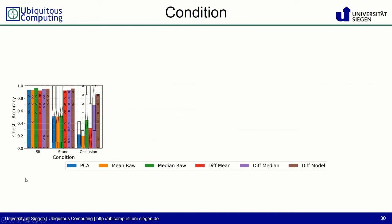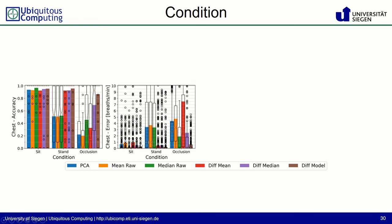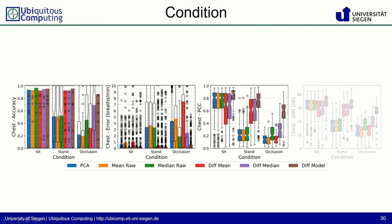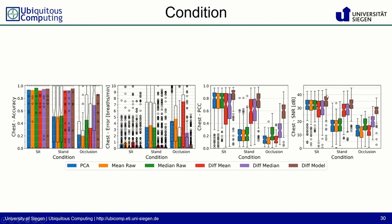Another parameter is the condition: sitting, standing, or occlusion through drinking gestures. Sitting does not pose a problem for any of the methods. Standing is well handled by the difference-based methods. When it comes to occlusion, the median is more stable than the mean counterpart, but our method has the highest accuracy. Error is also low for sitting and standing, with occlusion increasing the error somewhat, and correlation and signal-to-noise ratio show the same pattern.